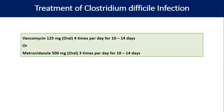For CDI (Clostridium difficile infection), the drug of choice is vancomycin 120 mg four times a day for 10–14 days. The alternative is metronidazole 500 mg three times a day for 10–14 days.